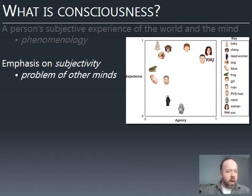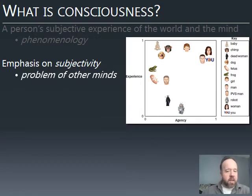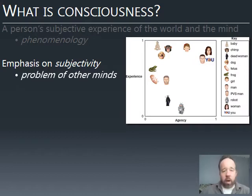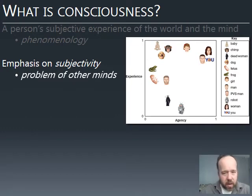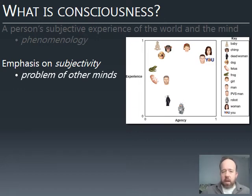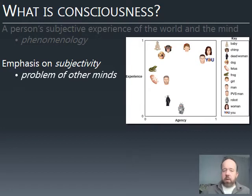When people give these ratings, they seem to break down along two dimensions. One is experience — the degree to which the entity or being feels emotions, is aware of the state of their body and responds to it: things like pain, pleasure, anger, happiness. The other dimension is agency — the organism's ability to make decisions, to plan ahead, to determine their own environment and fate. People say that babies have a pretty full set of experiences but don't have a lot of agency. They don't have the mental capacity to plan ahead.